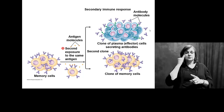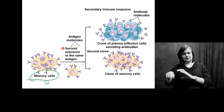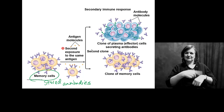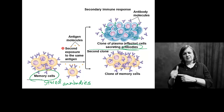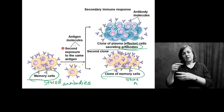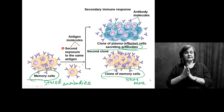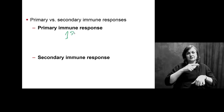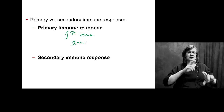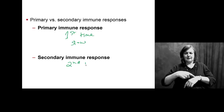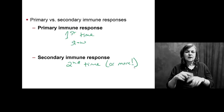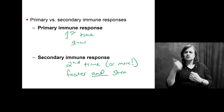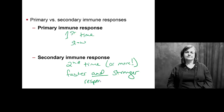If you've already been exposed and you have stored memory cells — stored antibodies — then this is much faster. You make a ton of antibodies very, very quickly, and you store more of them for later, in case you get an infection a third time. With our primary response, this is the first time you're exposed and it's slow. Secondary is the second time or more that you're exposed to an antigen, and this should be a faster and stronger response.